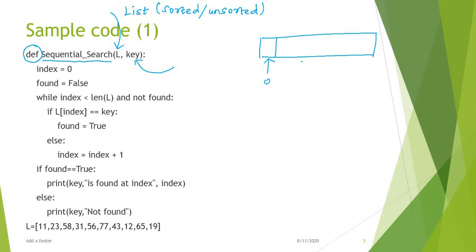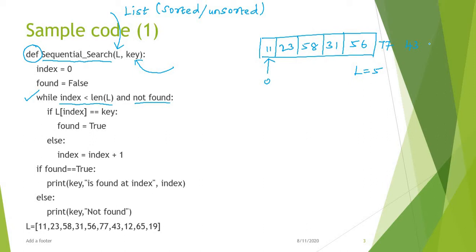I am defining a while loop with two conditions: the index is less than the length of l, and 'not found'. Length of l tells how many elements are available in the array. For example, if there are elements: 11, 23, 58, 31, 56, 77, 43, 12, 65, 90 — totally there are 10 elements. The index starts from zero, so the last index is 9.